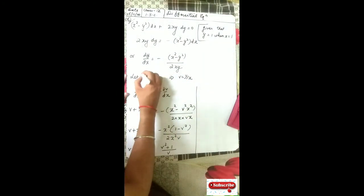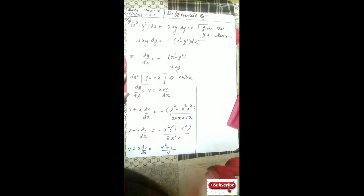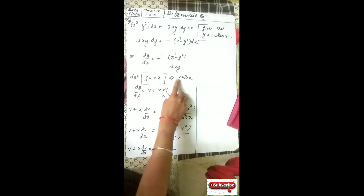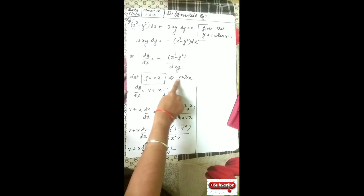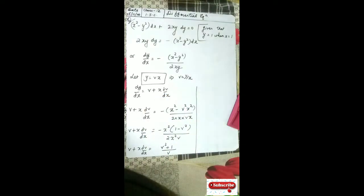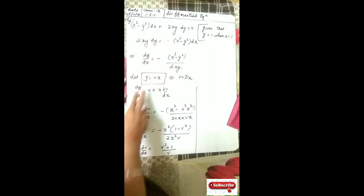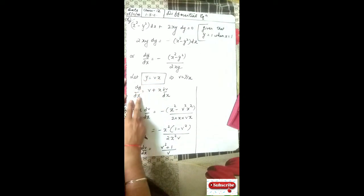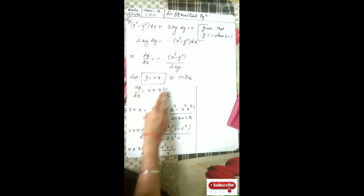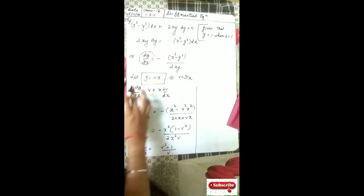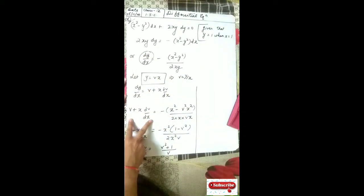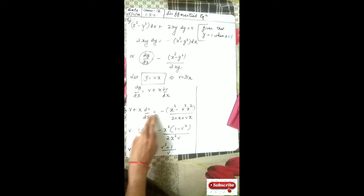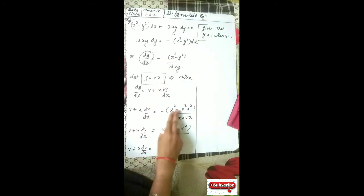For solving the homogeneous differential equation, as I told you, substitute y equal to vx, from which v equals y upon x. Differentiate both sides with respect to x, so dy/dx equals v plus x dv/dx.